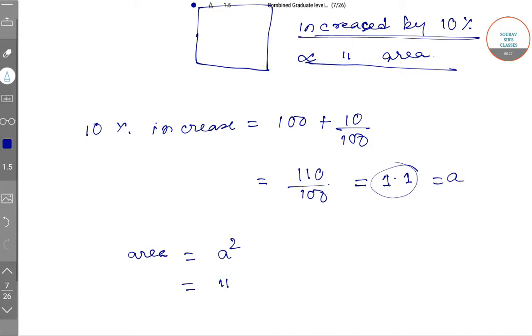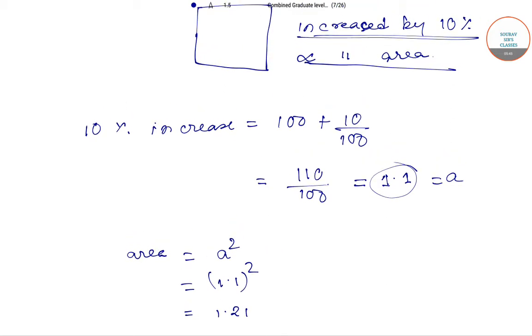as A squared, if we square it, that will be 1.1 whole squared. So 1.1 whole squared means 1.21.